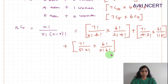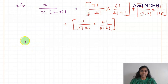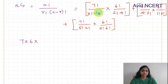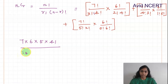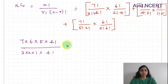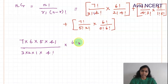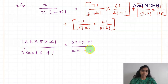To simplify, 7! is 7 × 6 × 5 × 4!, so the 4! in numerator and denominator cancel. For the first term: 7 × 6 × 5 divided by 3! (which is 6) gives 35. For 6C2: 6 × 5 × 4! divided by 2! × 4! — the 4! cancels, giving 6 × 5 / 2 = 15. So the first term is 35 × 15.